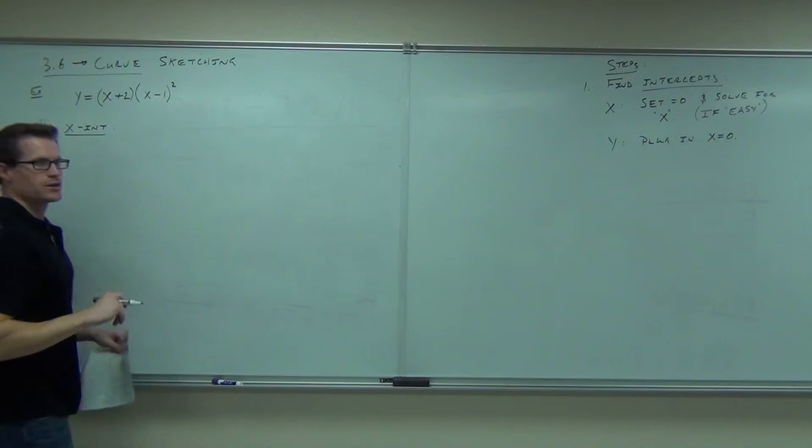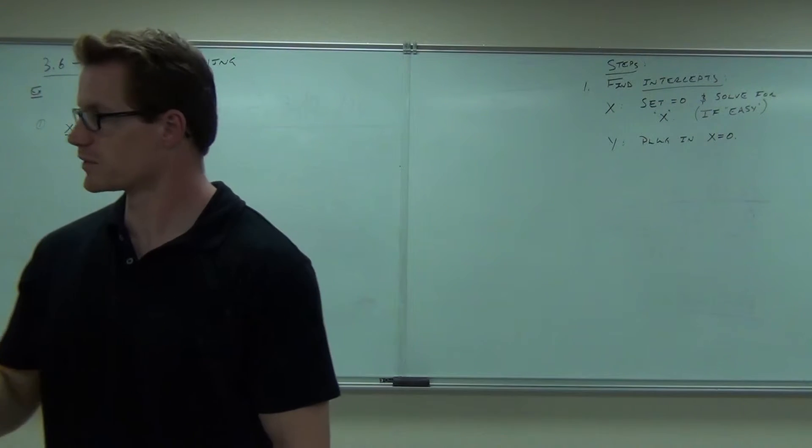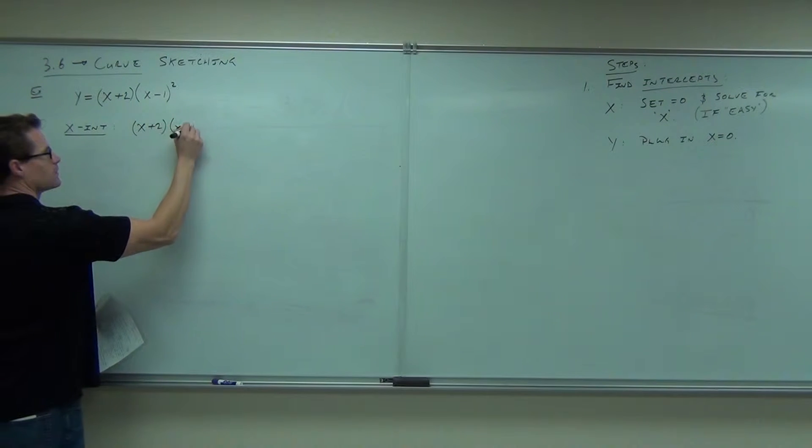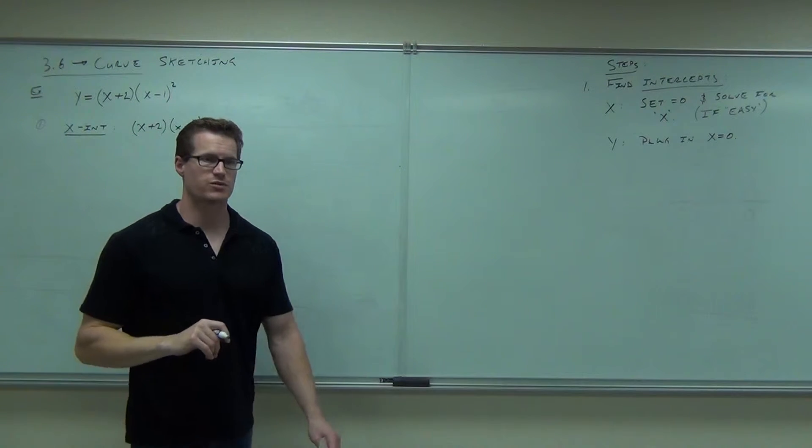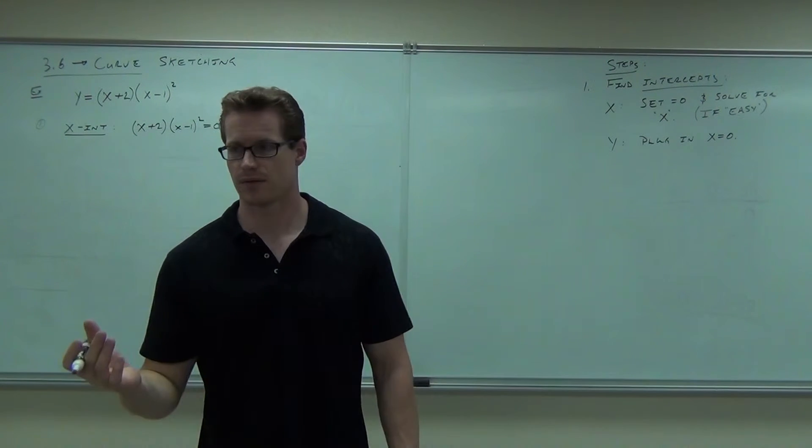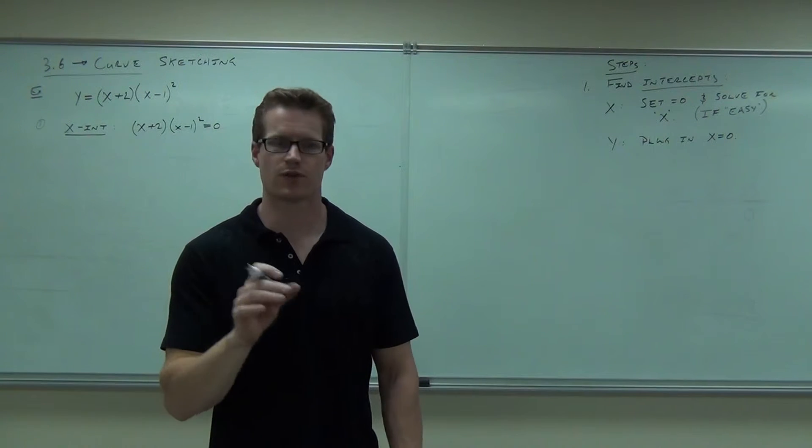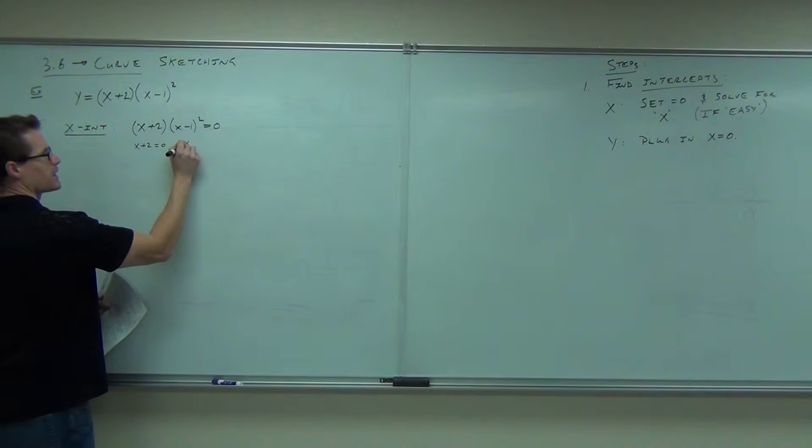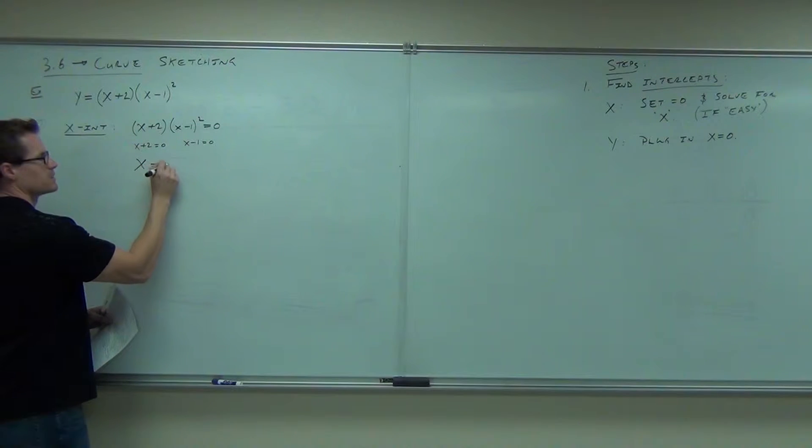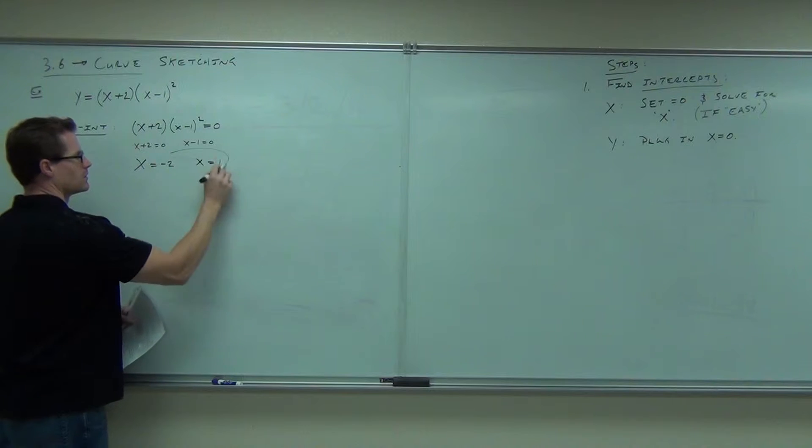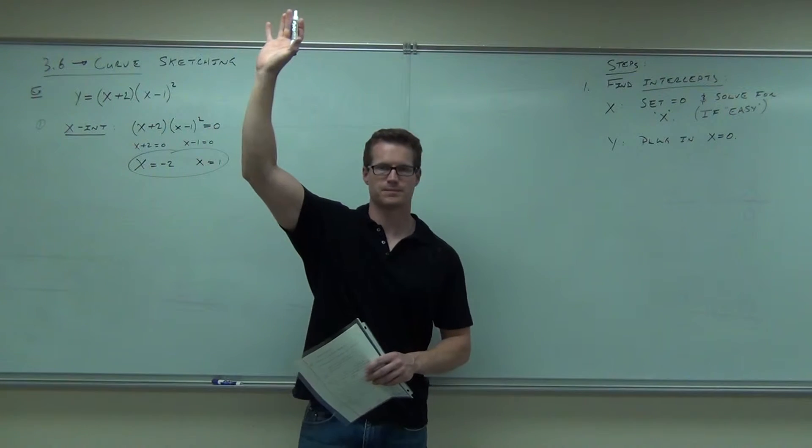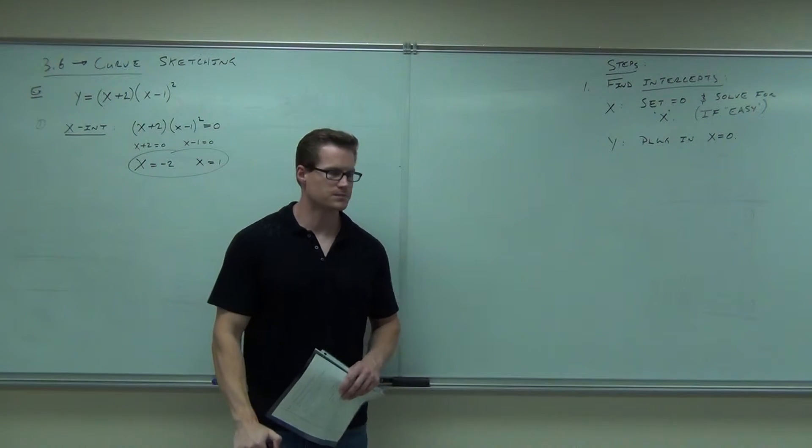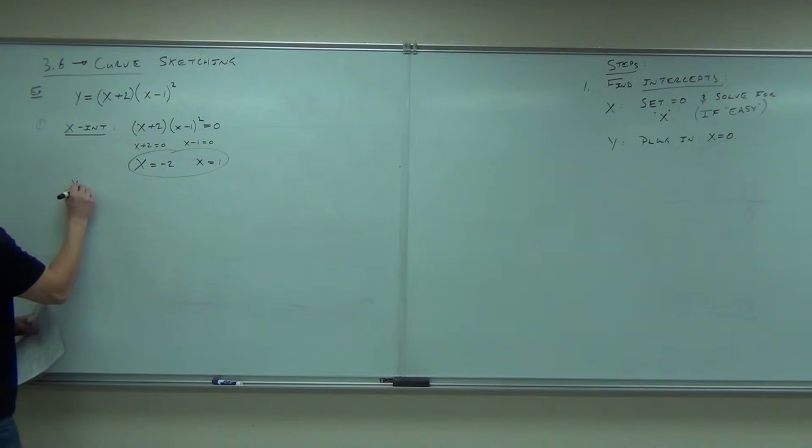Solving for X-intercept. This is just basic algebra. You're going to take your function, set it equal to zero, and solve for X. So we will have X plus two, X minus one squared equal to zero. That's great, because it's already factored for you. You'd have X plus two equals zero, X minus one equals zero, because it's zero product property. So X equals negative two and X equals one. You have two X-intercepts.